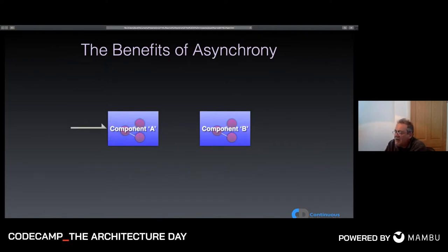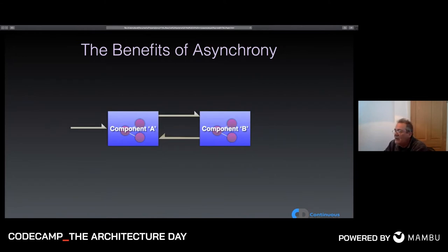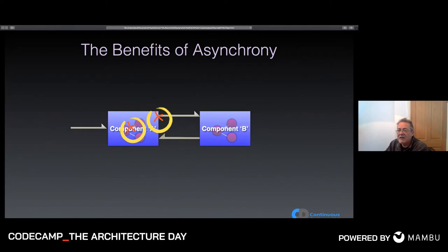Asynchronous messaging gives us other options. Component A sends an asynchronous message to component B, and component A is now free to do new work — whether handling the response from B or new incoming work. Sometime later, component B responds. As for failure modes: component A knows about its own bugs and connection failures. If we can trust our messaging infrastructure to deliver reliably between A and B, then component A can be self-contained. If component B was down or information was lost in transit, the infrastructure handles that on our behalf.